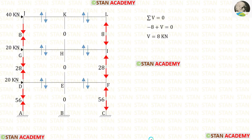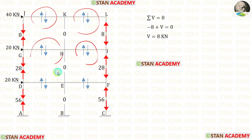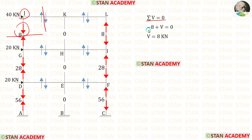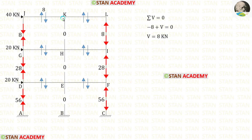We have calculated the axial forces in the columns. Using the axial forces, we can find the shear forces in the beams. First, let us take joint J and apply the rule sigma-V equals zero. This force is acting downwards, so that will be negative. Let us keep the unknown shear force as V — it is acting upwards, so that will be positive. Finally, for V we are getting 8 kN.